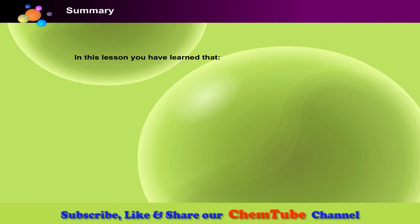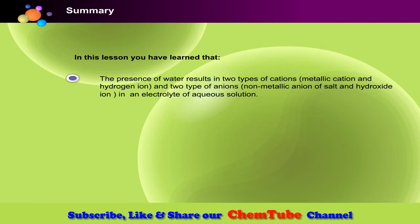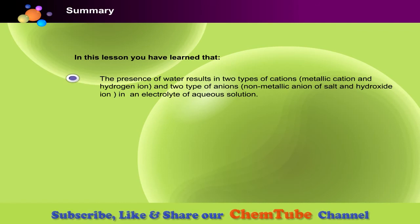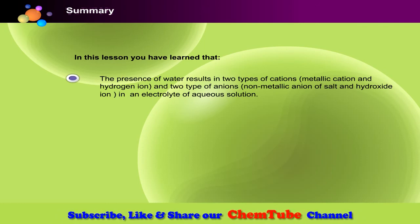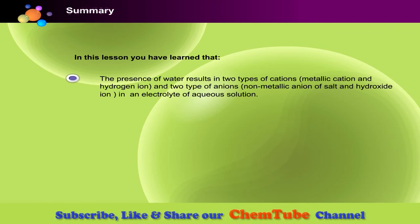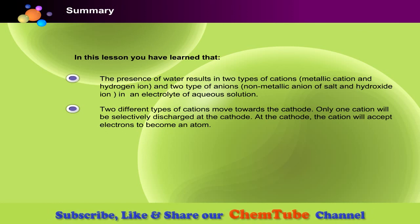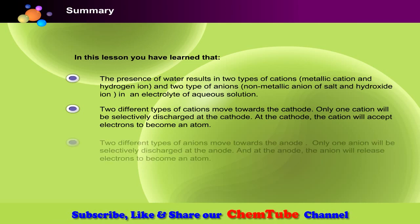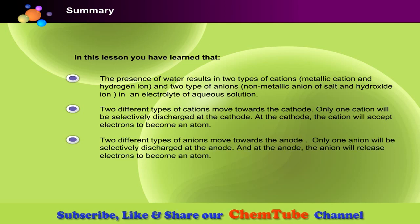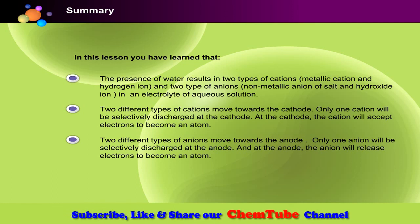In this lesson, you have learnt that the presence of water results in two types of cations — metallic cation and hydrogen ion — and two types of anions — non-metallic anion of salt and hydroxide ion — in an electrolyte of aqueous solution. Two different types of cations move towards the cathode, but only one is selectively discharged; it accepts electrons to become an atom. Two different types of anions move towards the anode, but only one is selectively discharged; it releases electrons to become an atom.